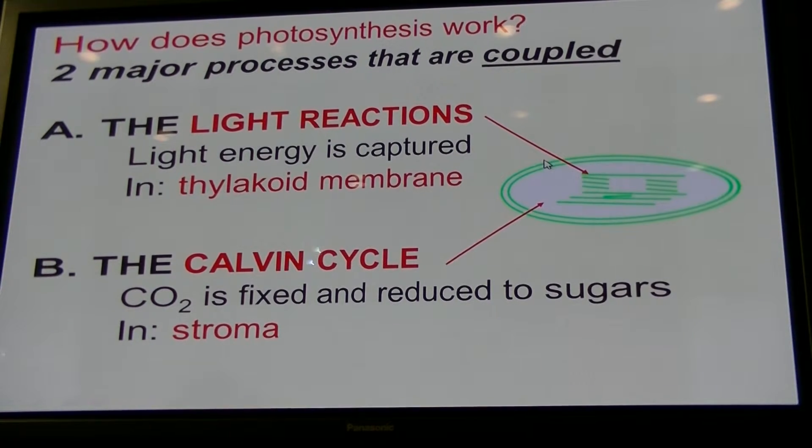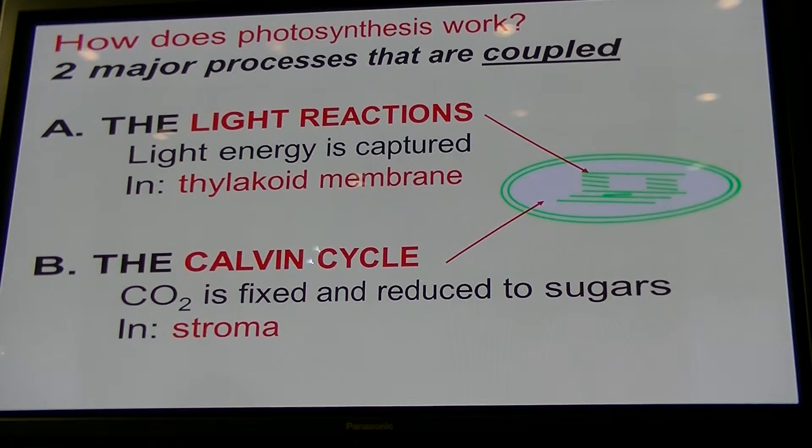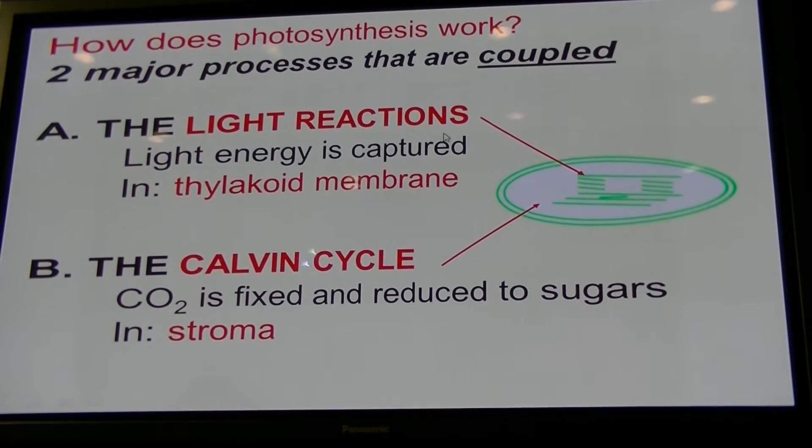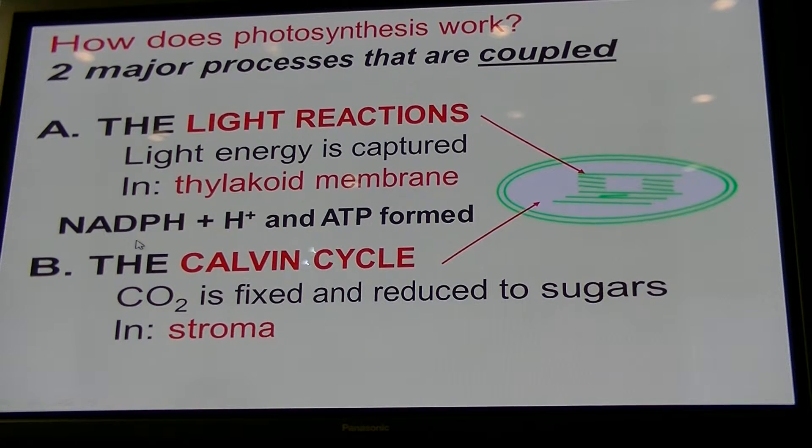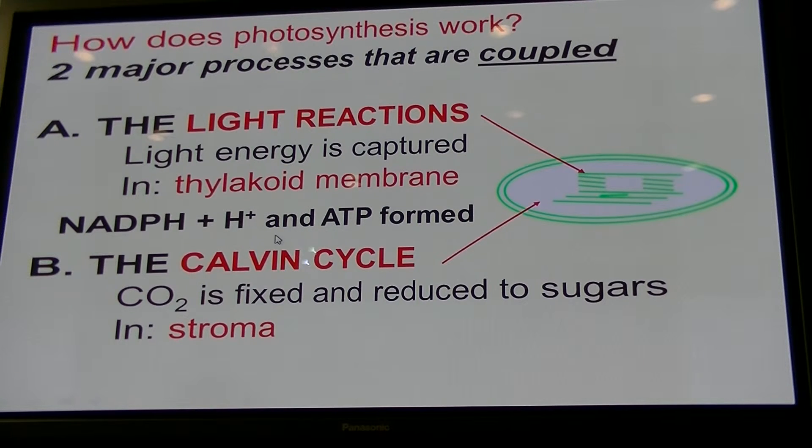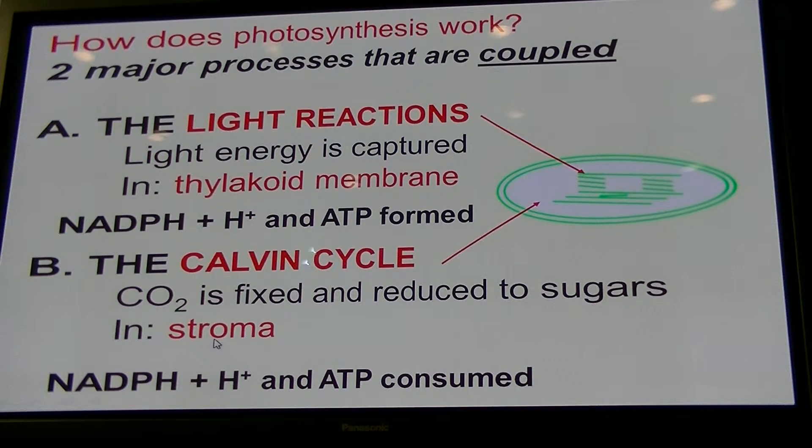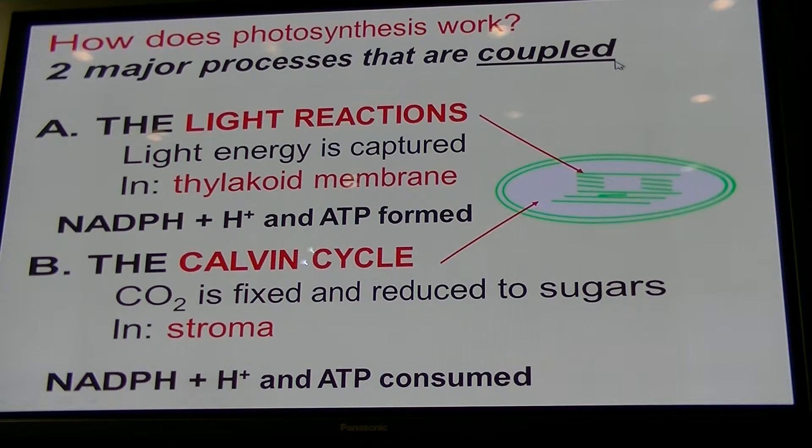How does photosynthesis work? Two major parts, which we call the light reactions and the Calvin cycle. The Calvin cycle is also sometimes called the dark reaction. I think that's a bad name. Better call it the Calvin cycle because the Calvin cycle and the light reactions happen at the same time. This is because the two processes are coupled. How are they coupled? In the light reactions, light energy is captured. This occurs in the thylakoids of the chloroplast. And this leads to the formation of reduced NADP+, so NADPH and a proton, as well as ATP. And these coenzymes are consumed at the same time in the Calvin cycle. So, the Calvin cycle needs to provide the NADP+ and ADP for the light reactions, and the light reactions provide the NADPH and the ATP for the Calvin cycle. They're coupled.